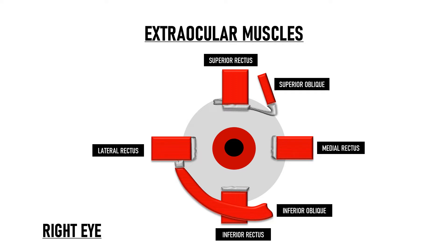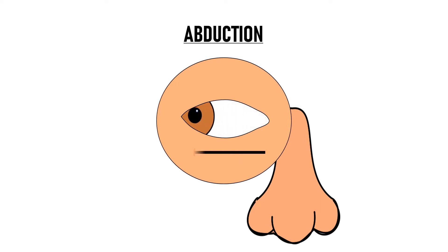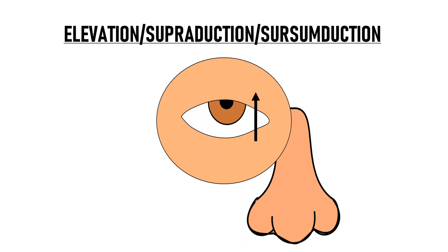There are 6 uniocular eye movements, also known as ductions. When the eye moves medially towards the nose it is called adduction. When the eye moves temporally towards the ear it is called abduction. When the eye moves up in the superior direction it is called elevation, also known as supraduction or sursumduction.